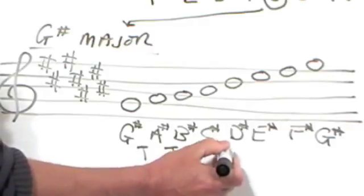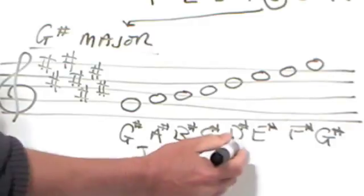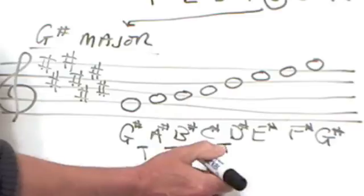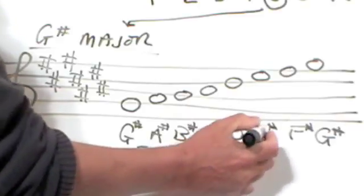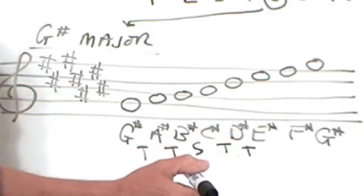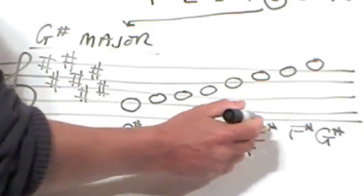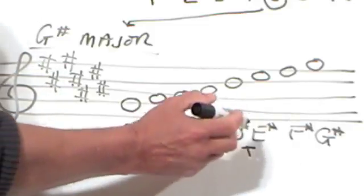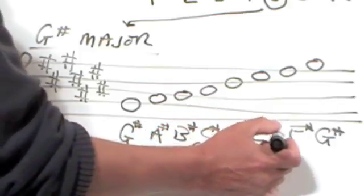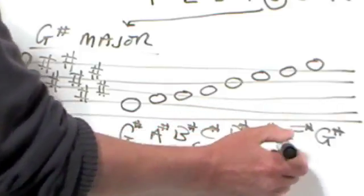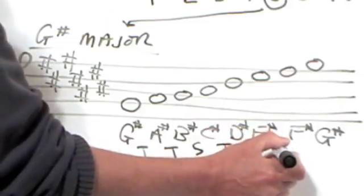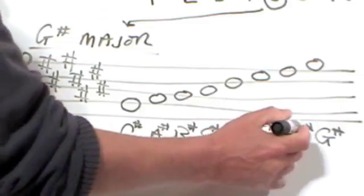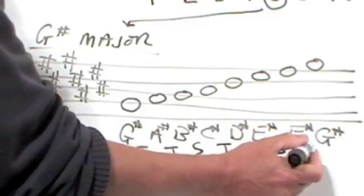C sharp to D sharp is a tone. D sharp to E sharp is a tone. E sharp to F sharp, another little tricky one. E sharp actually sounds the same as F natural. So again, between F natural and F sharp there'd only be a semitone. So between E sharp and F sharp there's only a semitone. And then F sharp to G sharp, a tone.